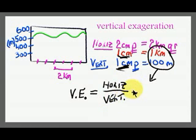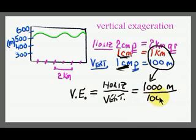And that is equal to, we can convert 1 kilometer to meters, that's 1,000 meters, and 100 meters for the vertical. Our units cancel and this is 100 goes into 1,000 10 times, or you can cross off the zeros, but this is equal to 10.